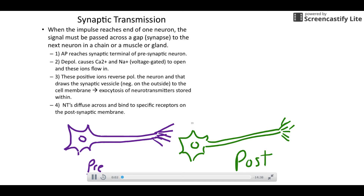Here's our video on synaptic transmission. We're going to do a quick review before we get going. At the bottom of the screen I've drawn two neurons — we call the first one in purple the pre-synaptic neuron, and the one in green is going to be our post-synaptic neuron.